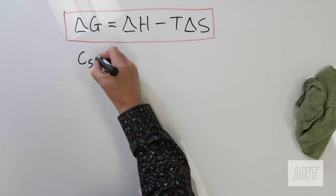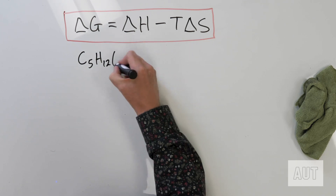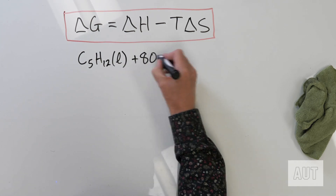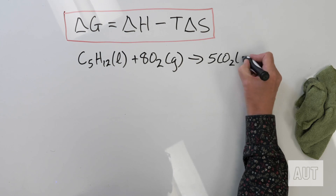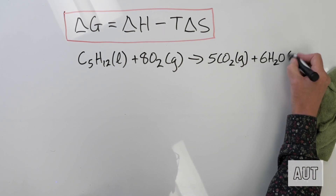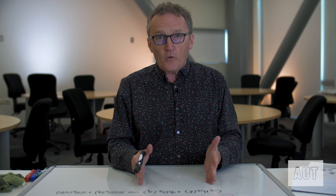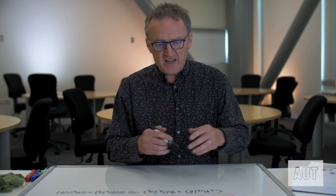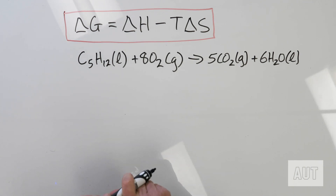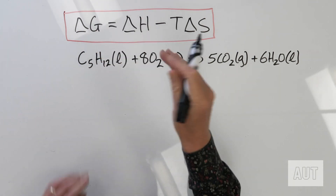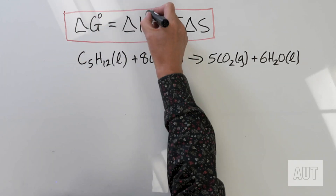The chemical reaction we're going to look at is the combustion of pentane — C₅H₁₂. If we react that with eight moles of oxygen, we get five carbon dioxides and six waters. Now, what do we need in order to determine ΔG for this reaction? We need our values of ΔH and ΔS. We can of course add the standard symbols, meaning we're operating under standard conditions.